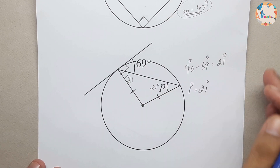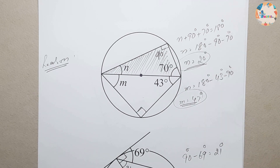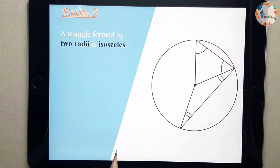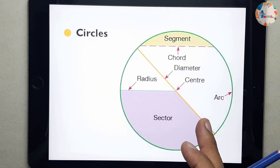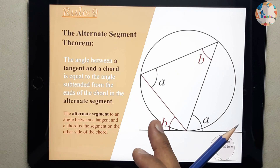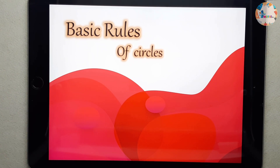We have gone through two questions covering all three rules discussed. This is a step-by-step syllabus revision series — today we covered circle theorems and three rules. There are other rules which will be covered in upcoming videos, so please go through Part 2 as well. Thank you very much for watching, don't forget to subscribe to the Maths TV channel and like the video.